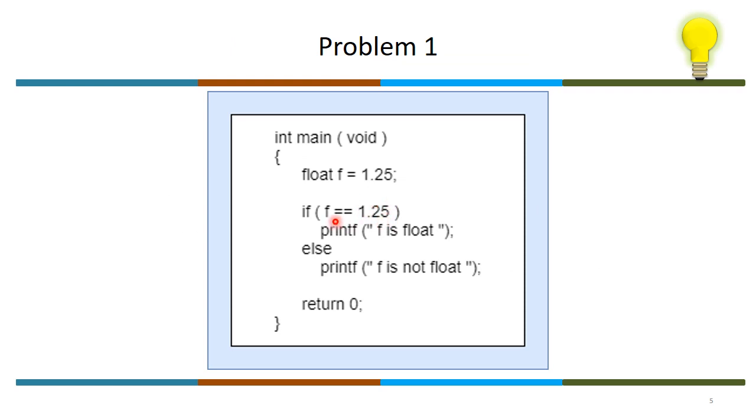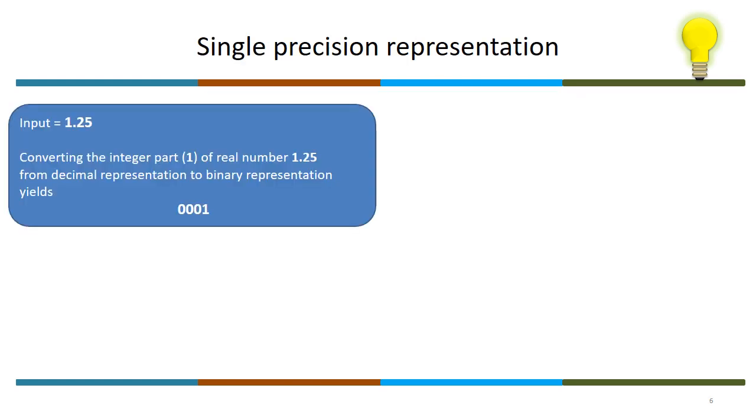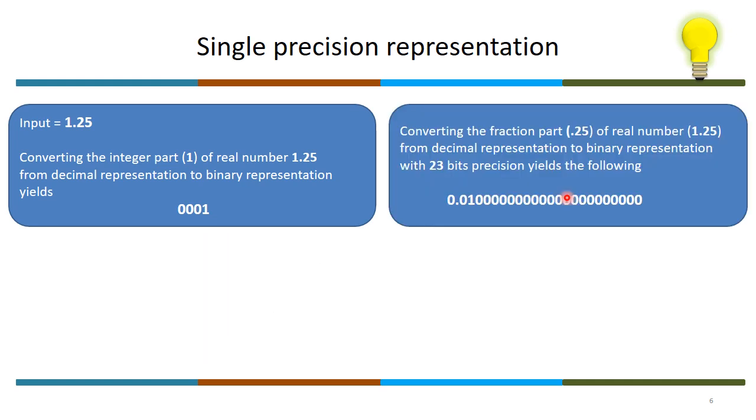Here 1.25 is double, and the compiler will treat this which the user has defined as float, but the compiler for this comparison will treat this as double. So what is the consequence? We will see in this example. You have 1.25, convert the integer part of the real number to binary representation.